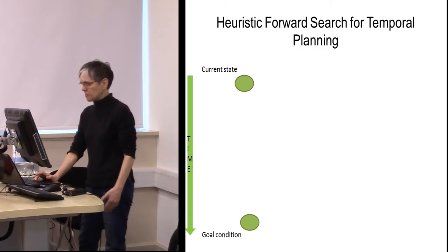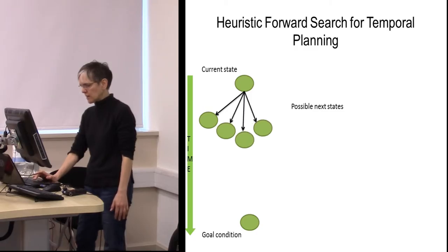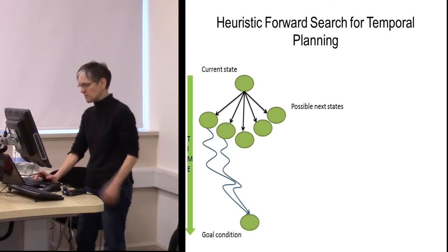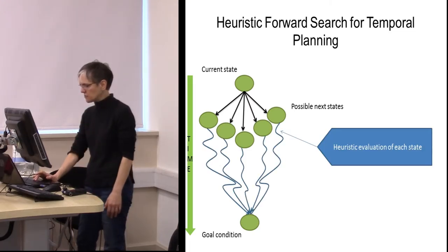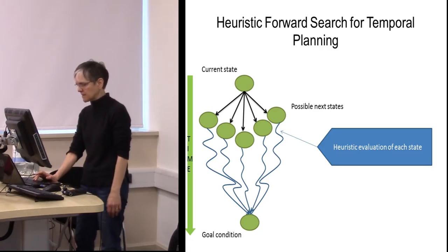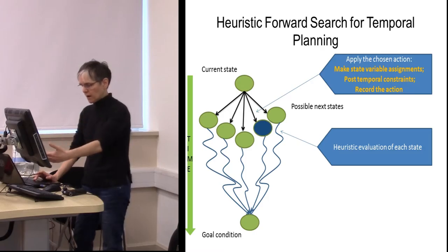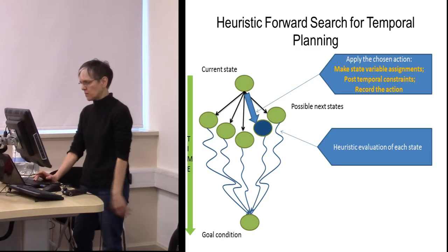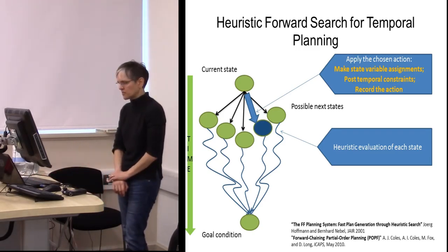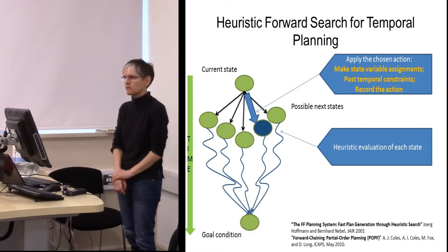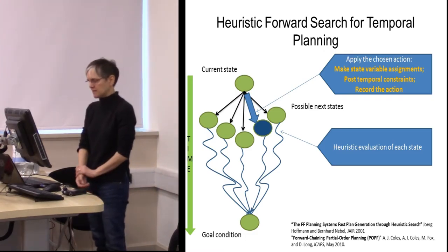Forward search planning works by starting in the current state, generating successor states by applying actions, evaluating them all using a heuristic to enable comparison, picking the best one, applying the action to update the state, and recording the action as part of the plan being constructed. This is a well-researched method in computer science with stable and robust software systems.